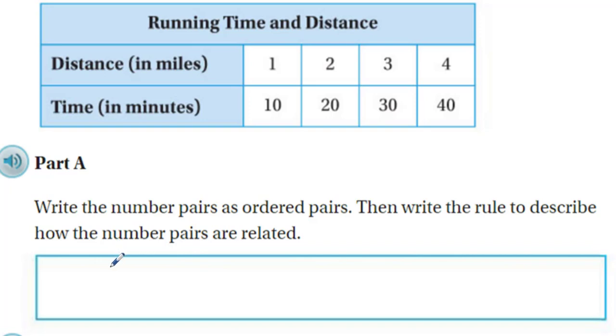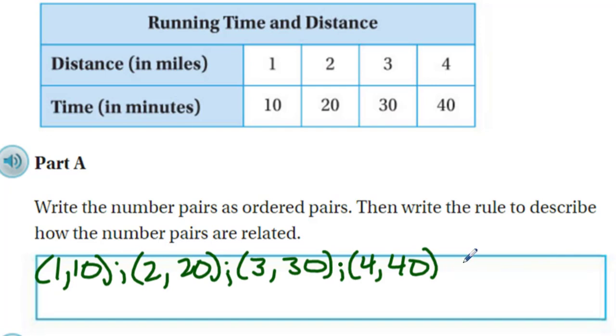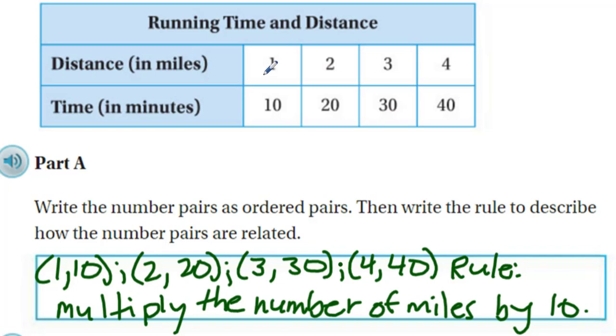Well let's do that part A. The numbered pairs. It's pretty obvious what we need to do there. We just need to write them out. So I'm going to start off with a one, ten. Two, twenty. You get the drift. So now the rule to describe. Pretty simple. We are basically the rule is to multiply the number of miles by ten. Times ten gives us that. Times ten gives us twenty. Works our way down.